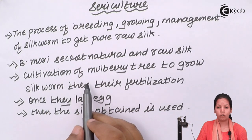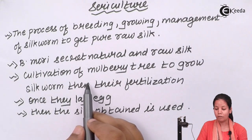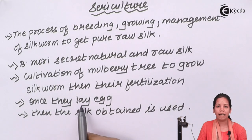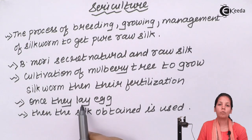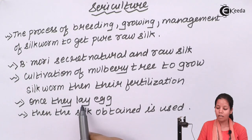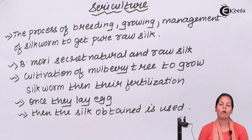Cultivation of the mulberry tree so that the silkworm can feed on its leaves, then waiting for the fertilization process, formation of eggs, hatching of eggs, and then formation of cocoons which will ultimately form silk — these are the key steps in sericulture. Ultimately it all boils down to the formation of silk by the silkworm.